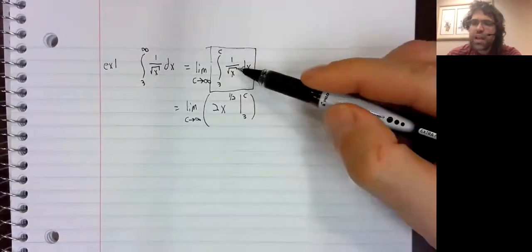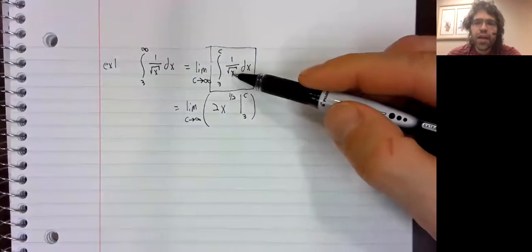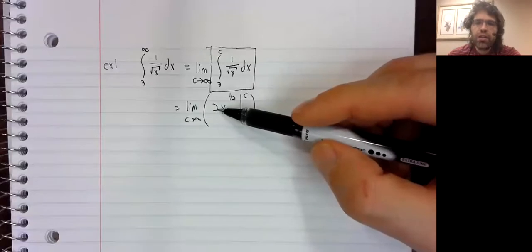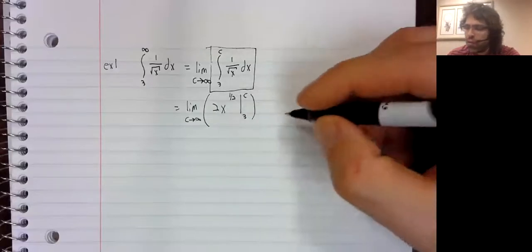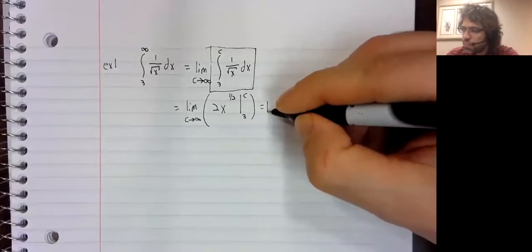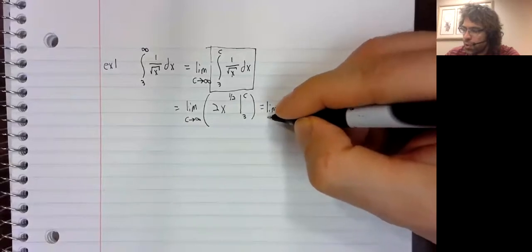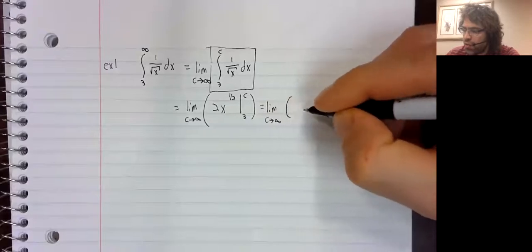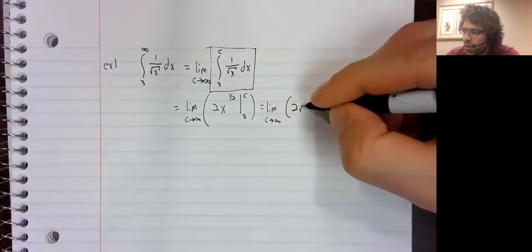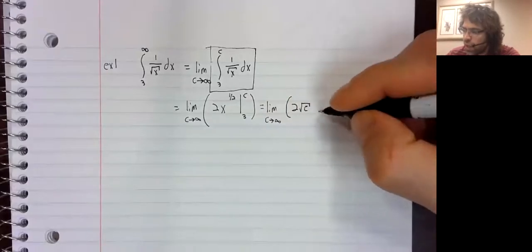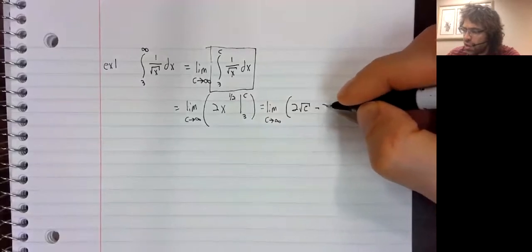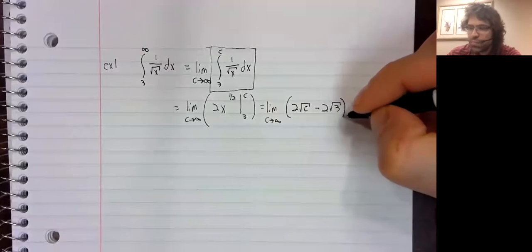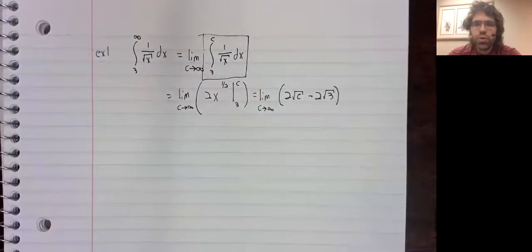This is x to the negative one half, so it bumps up by one, and then we divide by one half. So we've got the limit as c goes to infinity of twice the square root of c minus twice the square root of three.